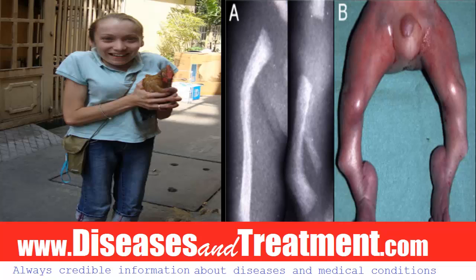People with Campomelic Dysplasia are often born with weakened cartilage that forms the upper respiratory tract. This abnormality, called laryngotracheomalacia, partially blocks the airways and causes difficulty in breathing, contributing to poor survival of infants with this condition.